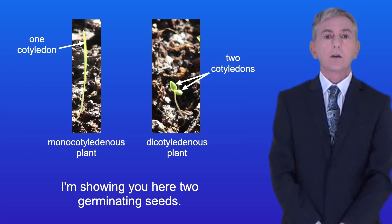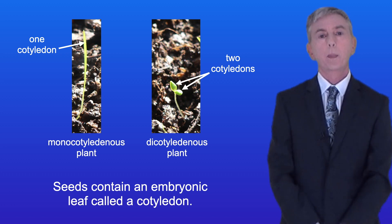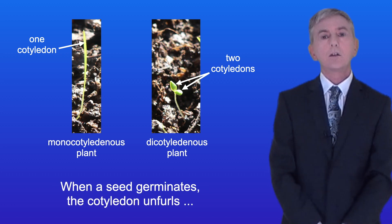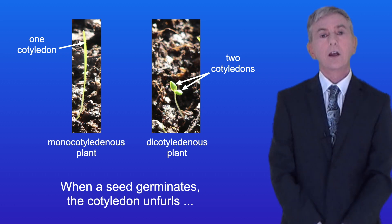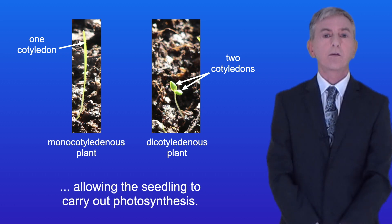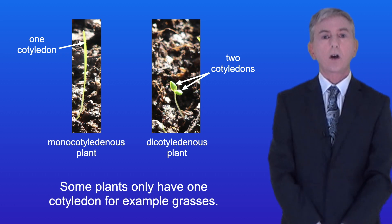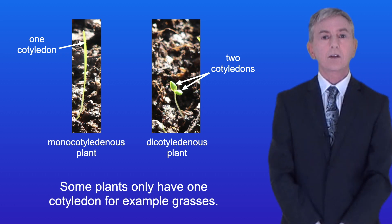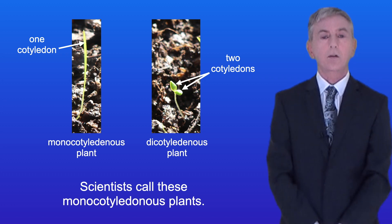I'm showing you here two germinating seeds. Now seeds contain an embryonic leaf called a cotyledon. When a seed germinates the cotyledon unfurls allowing the seedling to carry out photosynthesis. Some plants only have one cotyledon, for example grasses. Scientists call these monocotyledonous plants.